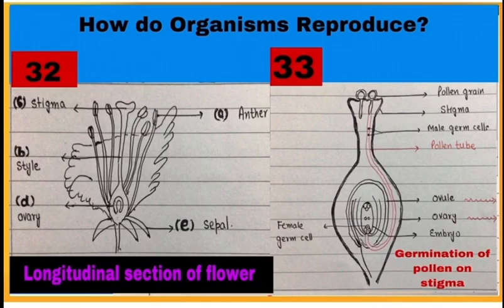In 32, see all important parts of a flower. Flower is the reproductive part of a plant. In 33, see the germination of pollen on stigma after pollination.